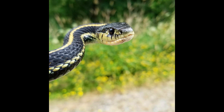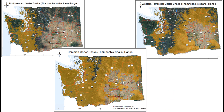As you can see based on these maps, garter snakes actually inhabit a good bit of Washington, and they inhabit a lot of different areas. You can often find garter snakes in prairies, in forest, and sometimes at high elevation. But more likely than not, you're going to find garter snakes around aquatic environments.